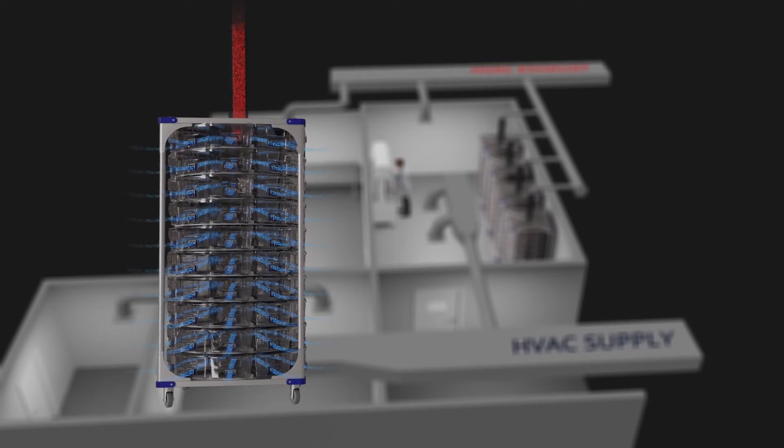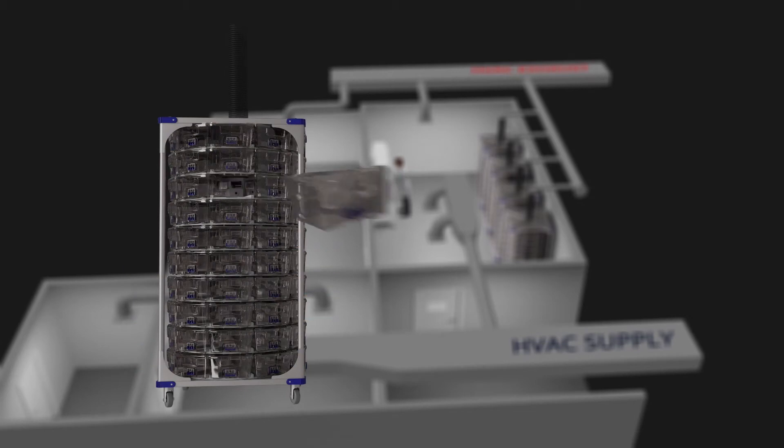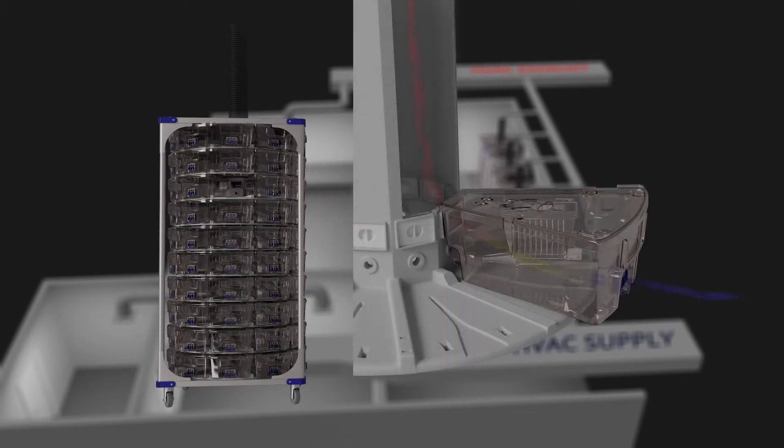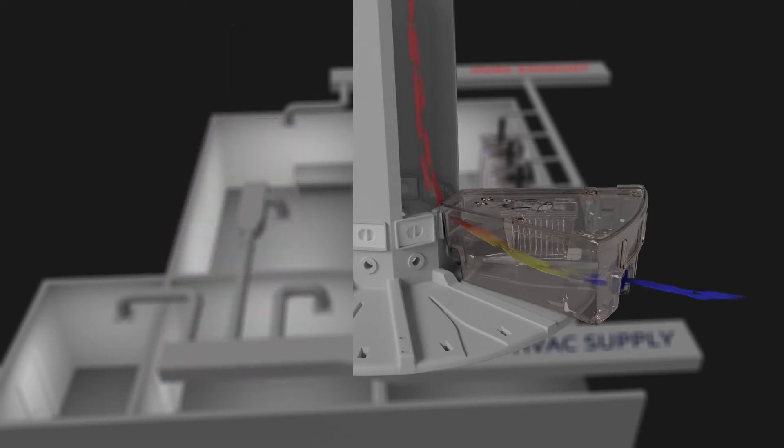In the room, the room air travels through the filtered front of each cage and then travels through the cage in a laminar, slow, and thorough manner, taking all the allergens, odor, and infectious agents with it, where it then exits through the back of the cage into the rack's central plenum.